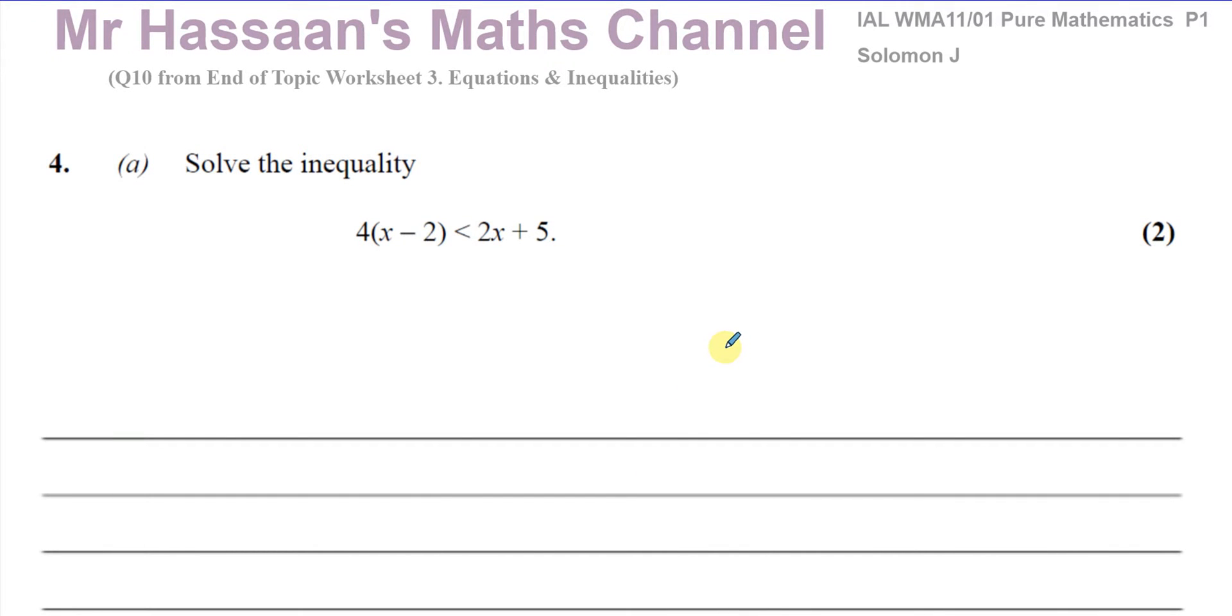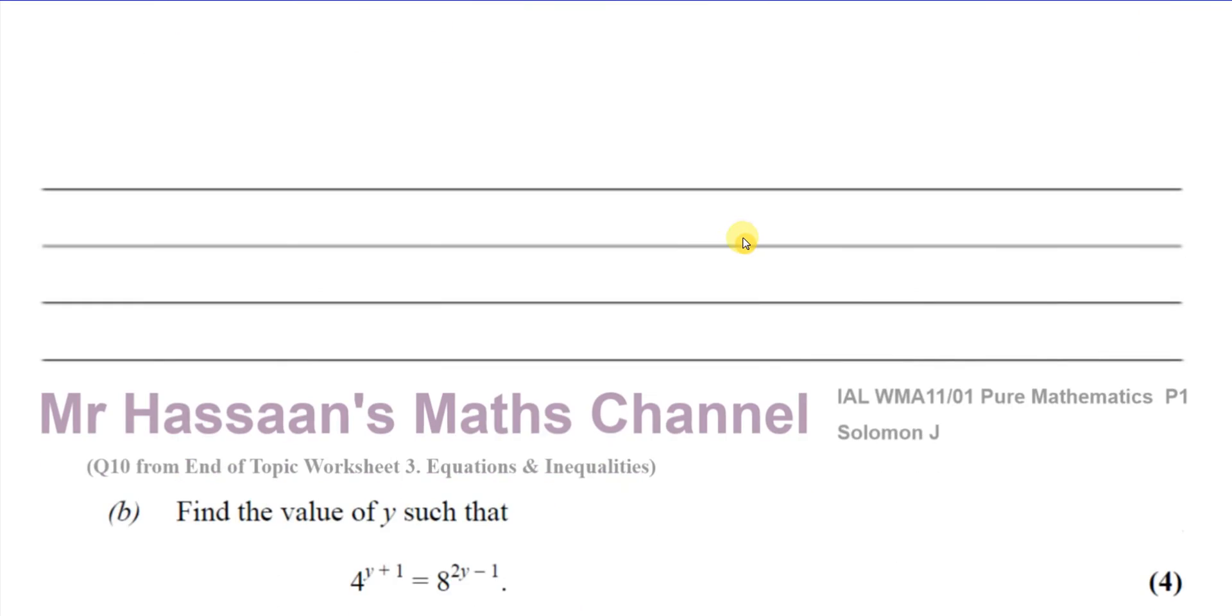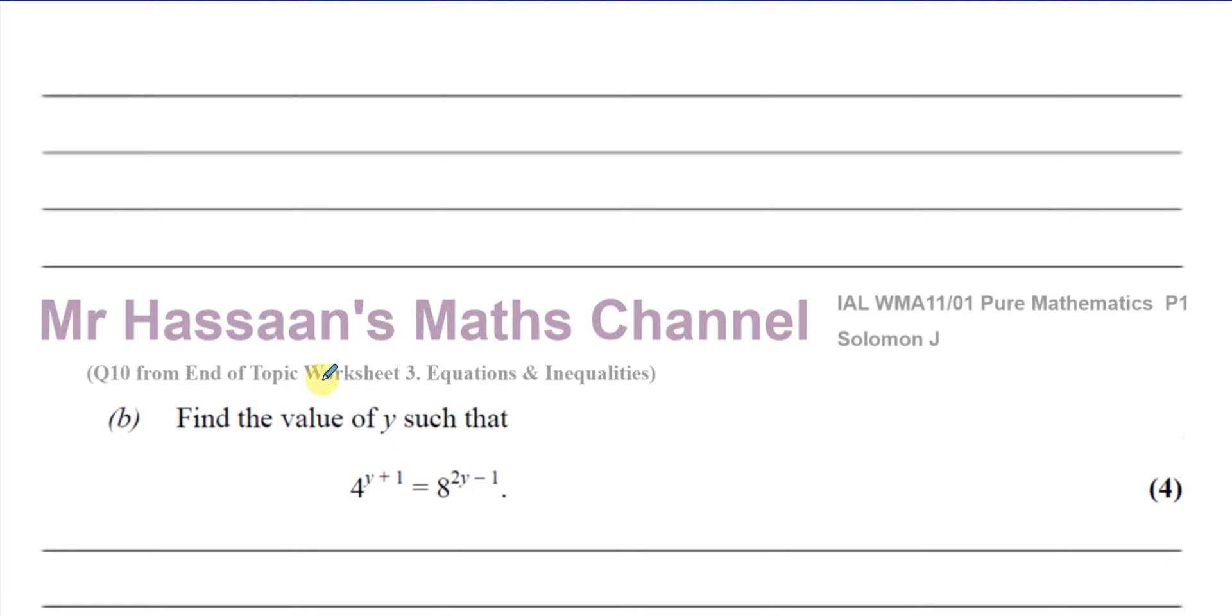Okay, welcome back. This is now question number four from the Solomon J paper. It's a question about inequalities and part B is actually the question I was asked about, which is about indices.